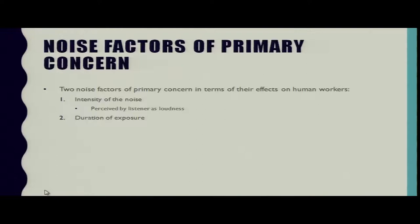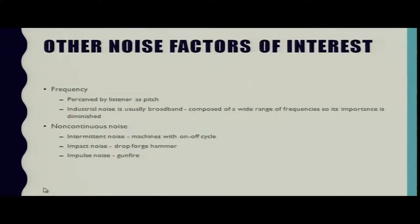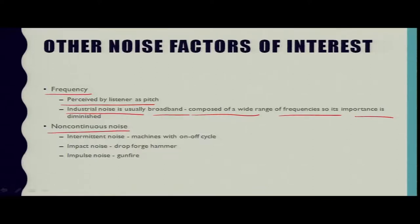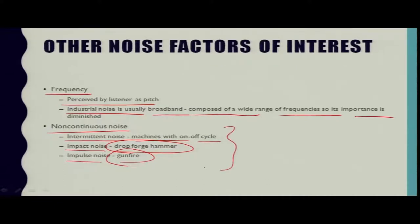The two noise factors of primary concern in terms of their effects on human workers are the intensity of the noise and duration of the exposure. Other noise factors of interest include frequency, which is perceived by listeners as pitch. Industrial noise is usually broadband, composed of a wide range of frequencies. Non-continuous noise includes intermittent noise from machines with on-off cycles. Impact noise includes drop forge hammers, and impulse noise includes gunfire industries. These are examples of non-continuous noise that still make a large impact on workers in the surrounding.